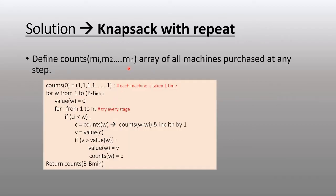Here's the knapsack with repeat as a solution. We have this variable which keeps track of m1, m2, mn called counts. This counts, for any given weight, keeps a list of all the machine counts that can be purchased at that budget point. Then we compute the optimal set of machines for that budget point.